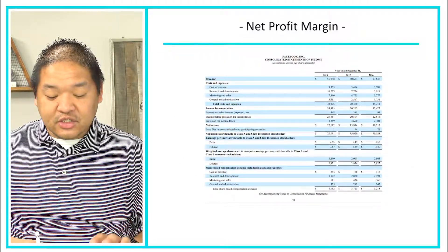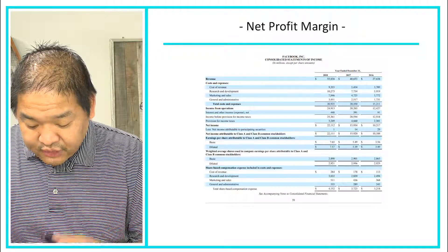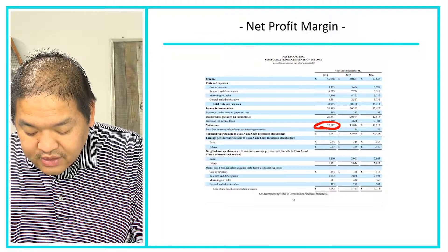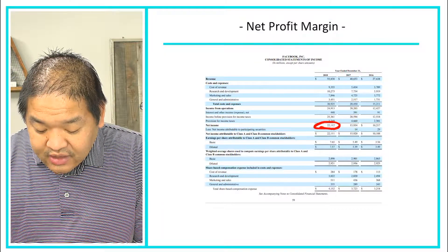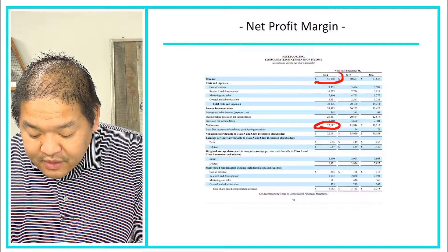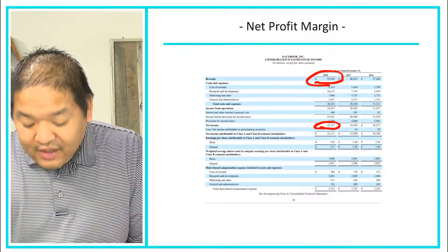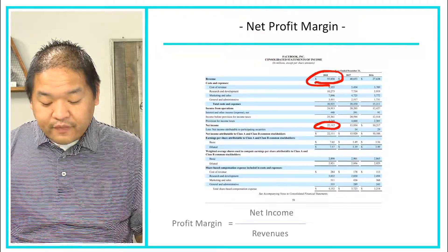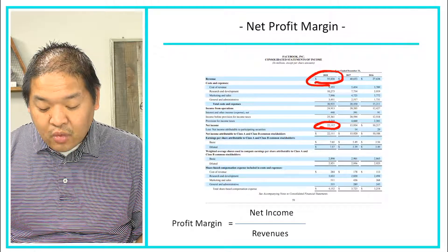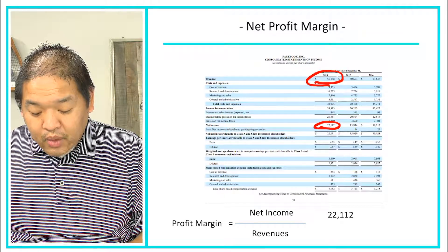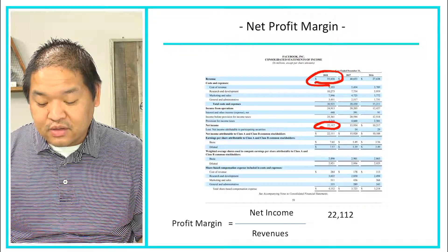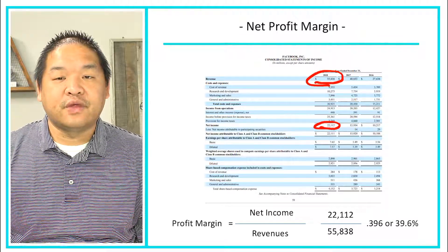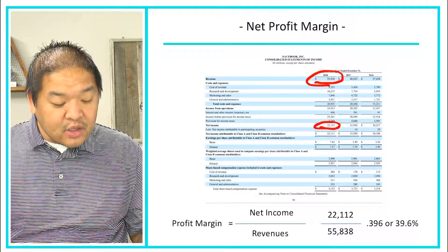Looking at Facebook's numbers here — their net income is $22,112,000,000 and their total revenue is $55,838,000,000. Using our equation, net income divided by revenues: $22.112 billion divided by $55.838 billion gives us a profit margin of 39.6%. So what does that mean?